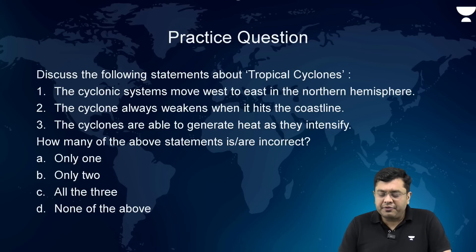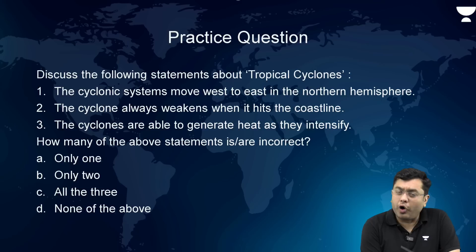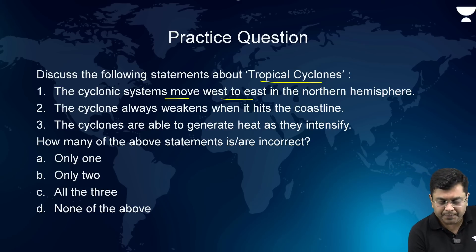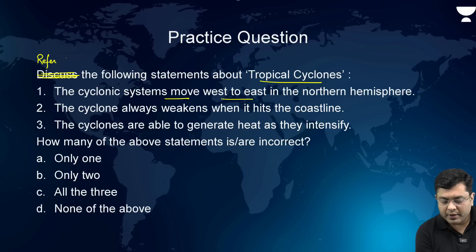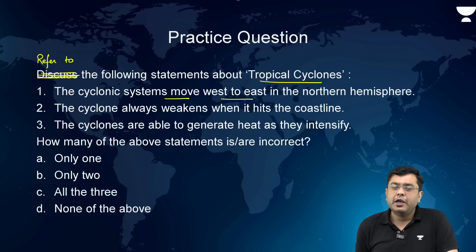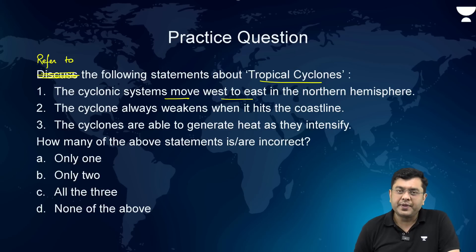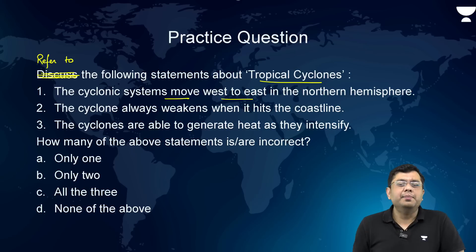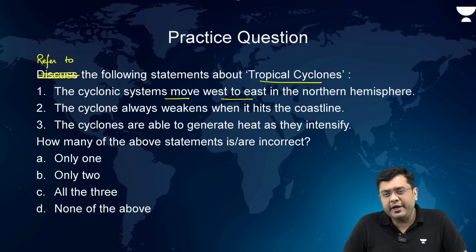Now let us look at a practice question that can be framed from this topic. Analyze the following statements about tropical cyclones: (1) Cyclonic systems move west to east in the Northern Hemisphere. (2) The cyclone always weakens when it hits the coastline. (3) Cyclones are able to generate heat as they intensify. How many of the above statements are incorrect? Look at the question and find the correct answer — put it in the comment section below.